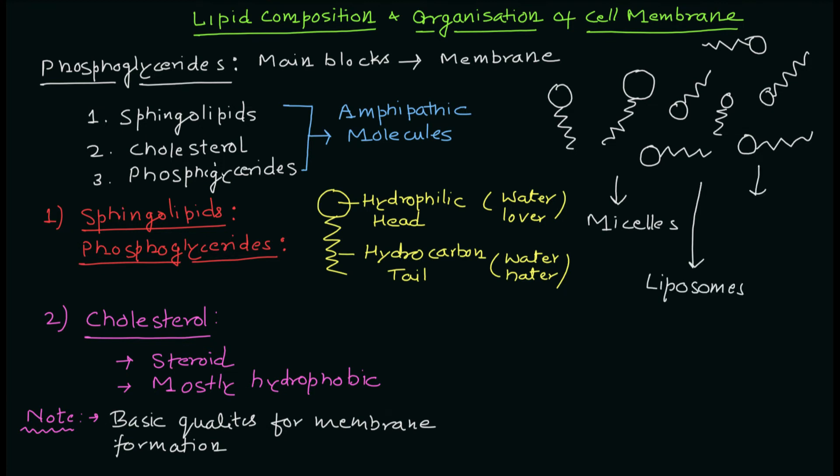First structure is micelle, second liposomes, third is the phospholipid bilayer. And this is going to happen because of their chemical property - they have two distinct portions that we have already discussed. So first structure that is going to form is the micelles and second is the liposomes.